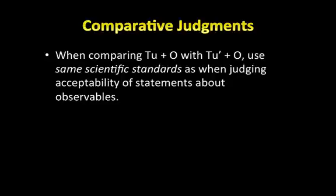So there aren't two different epistemic standards — one for observables and one for unobservables. Instead, we just use the same types of judgments in accepting a bundle or collection of statements both about observables and unobservables, compared with another collection of statements both about unobservables and observables. And so, overall, from Kitcher's point of view, van Fraassen's epistemology is deeply flawed.